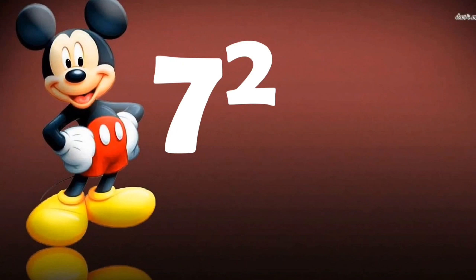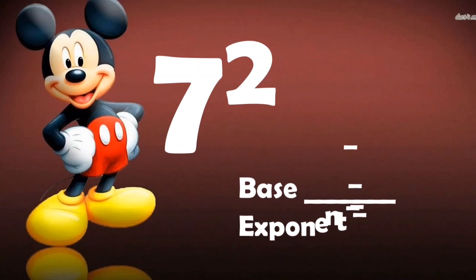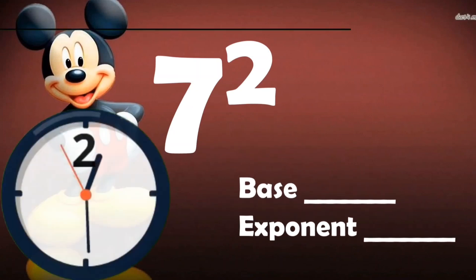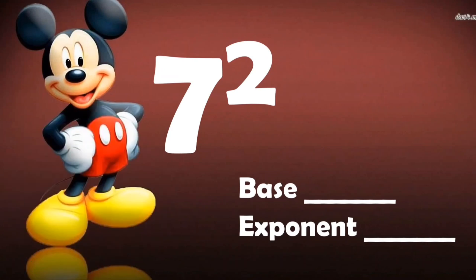And the last one is 7 squared. What is the base and what is the exponent? Yes! You are correct! The base is 7 and the exponent is 2.